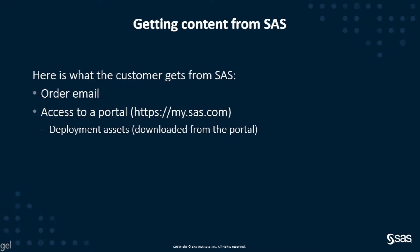When a customer purchases a SAS offering, he will get two things. First, an email summarizing the order contents, like the products included in the order and the site number, which identifies the company or the customer. The second thing is access to the mysas.com portal, which is a public portal from where the customer will be able to download the deployment assets. The goal of this presentation is to detail this process.